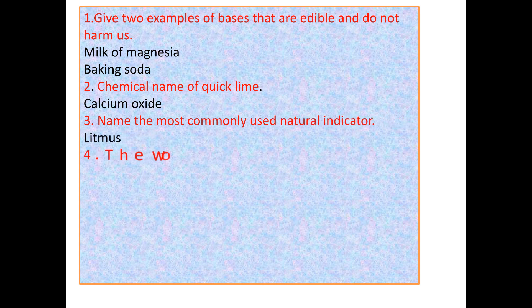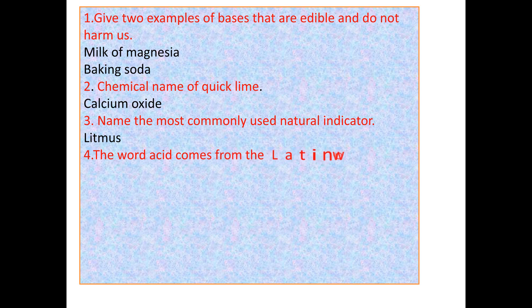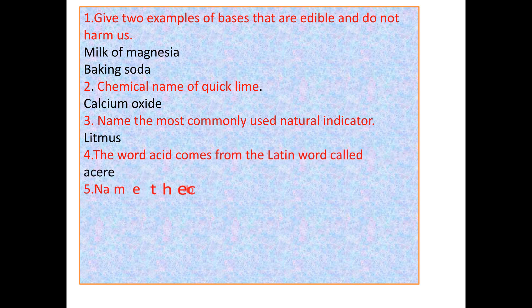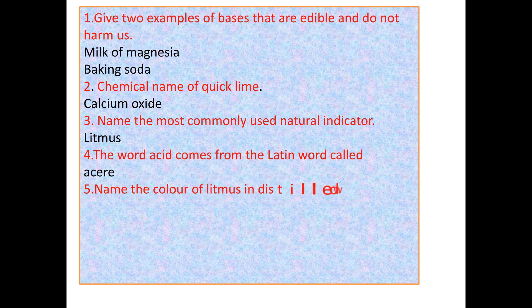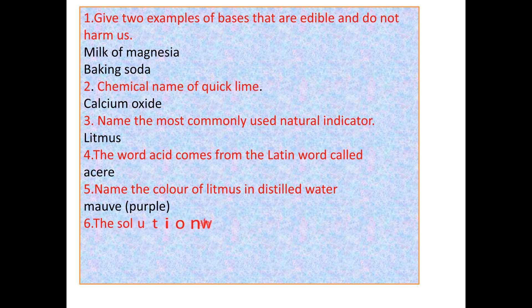Question 3: Name the most commonly used natural indicator. That's litmus. Question 4: The word 'acid' comes from the Latin word 'acidus.' Question 5: Name the color of litmus in distilled water. That's purple color.